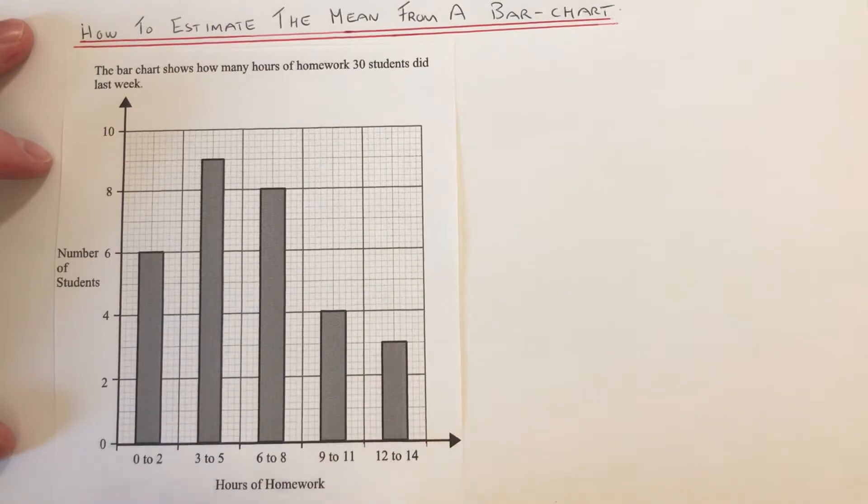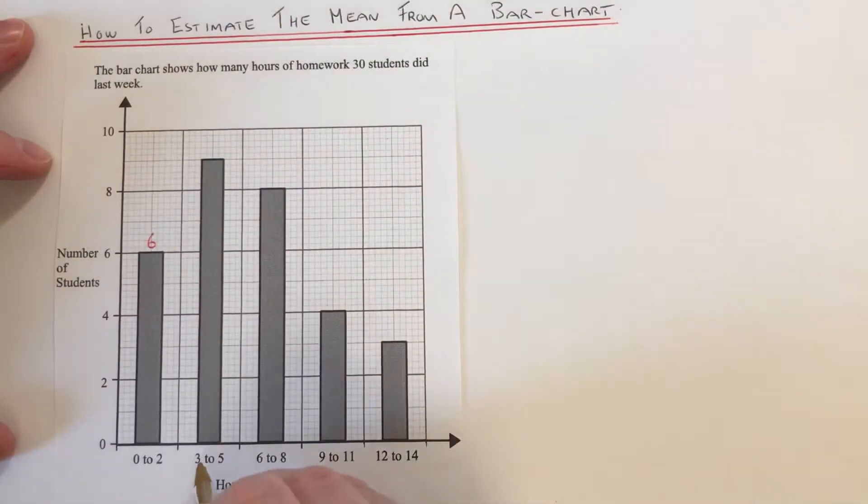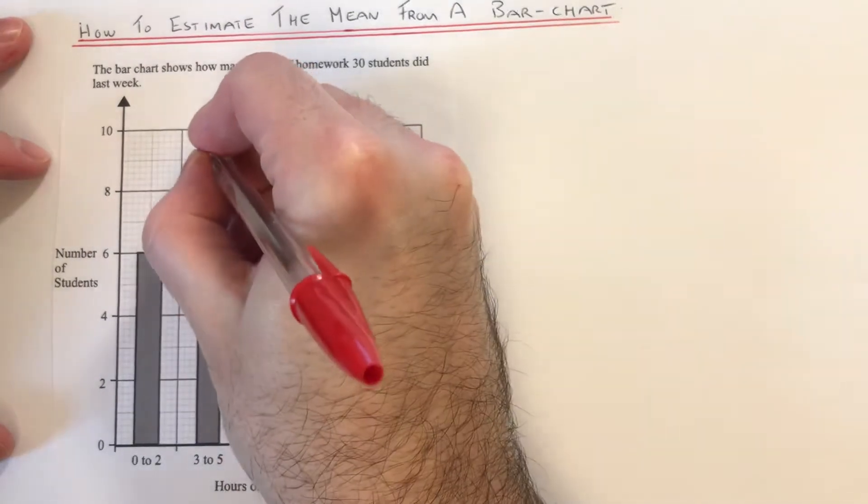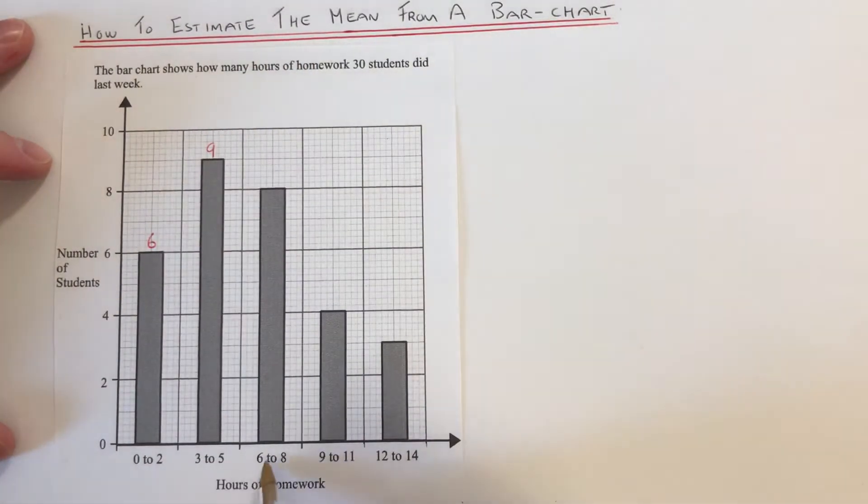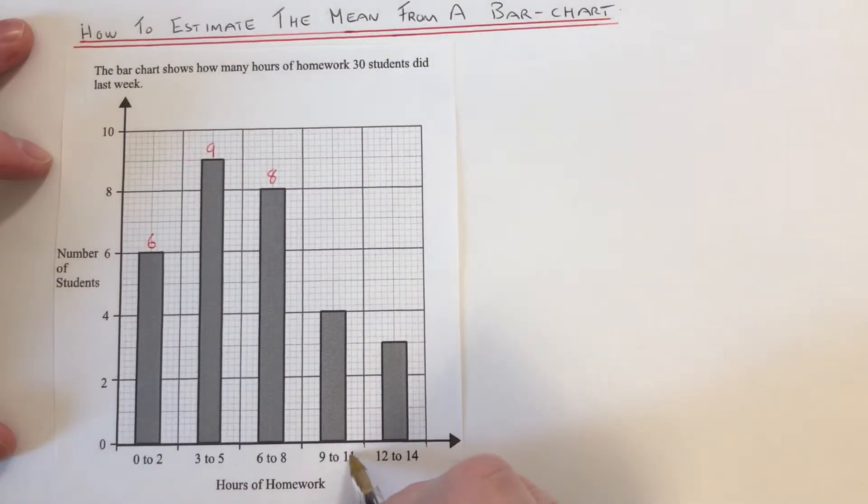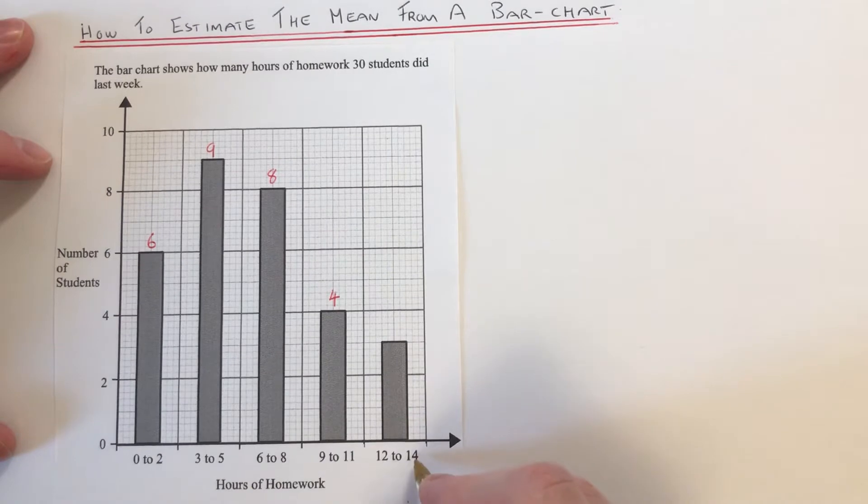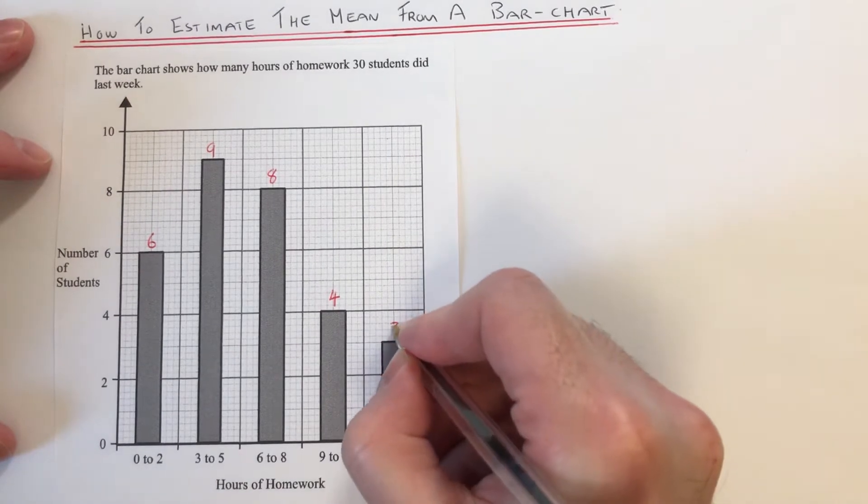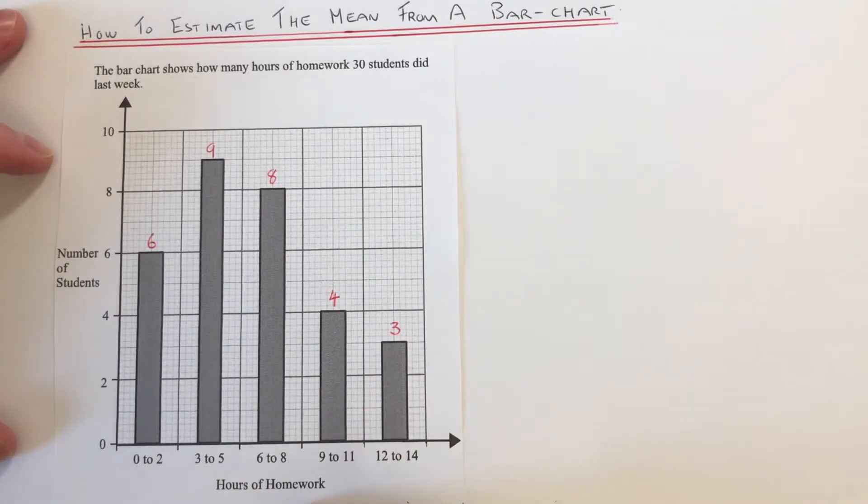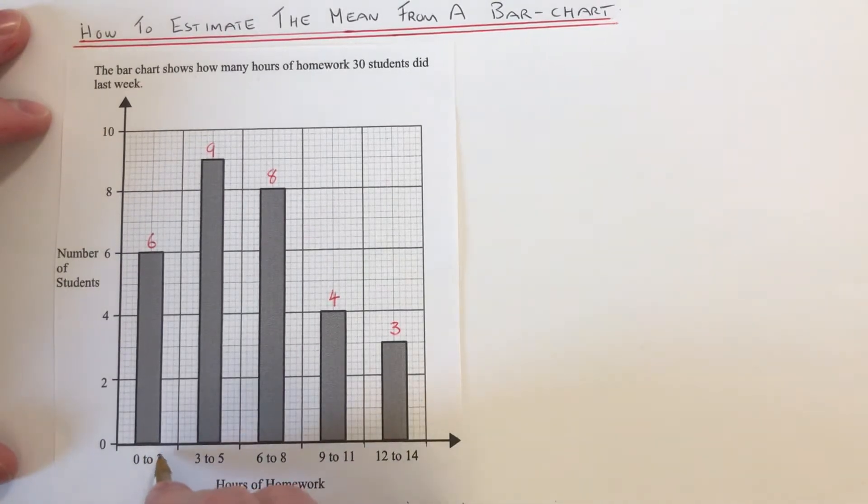So 0 to 2, we have 6 students. 3 to 5, we have 9 students. 6 to 8, we have 8 students. 9 to 11, we have 4 students. And 12 to 14, we have 3 students. Next thing I'm going to do is work out the midpoint of each group.